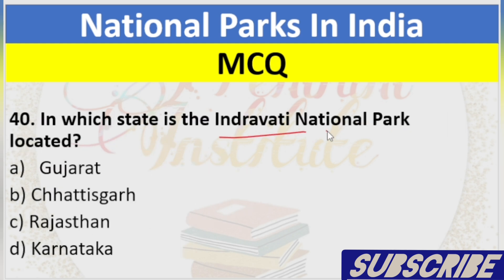Question 40: In which state is the Indravati National Park located? A. Gujarat, B. Chhattisgarh, C. Rajasthan, D. Karnataka. Answer: B. Chhattisgarh.